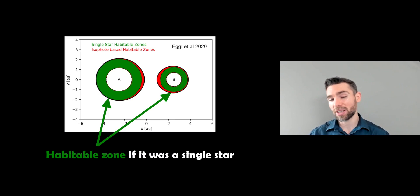So looking at it properly from a proper study where they actually calculated this out and modelled it, you've got the green area here, which is the habitable zone for a single star. So this doesn't take into consideration the second star.